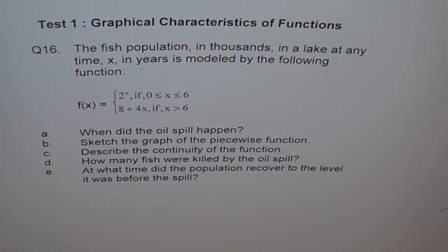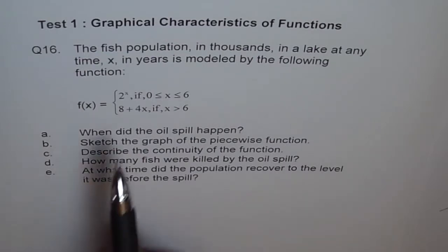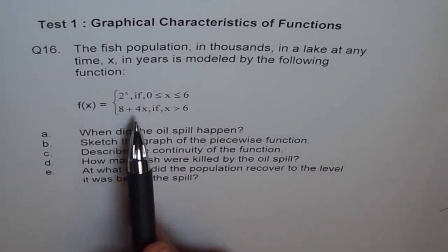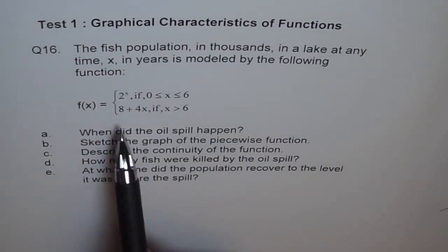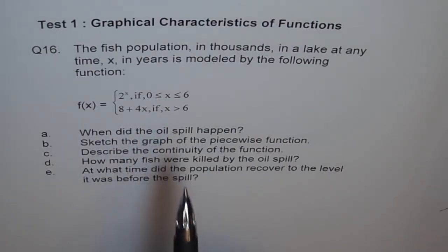Here is an application problem. Question 16. The fish population in thousands in a lake at any time x in years is modeled by the following function: f(x) equals 2 to the power of x if x is between 0 and 6, and it equals 8 plus 4x if x is greater than 6.